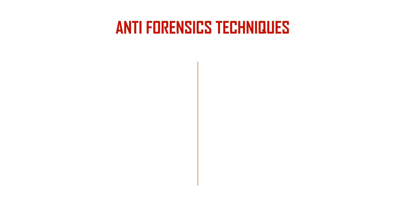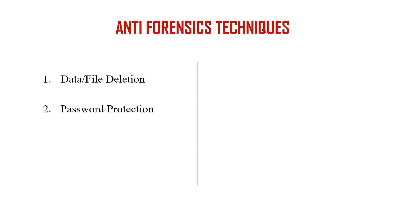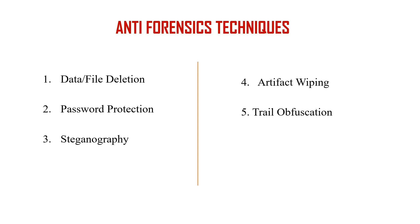Next we will see different antiforensic techniques. These are the methods that make the investigation process harder in order to protect the attacker. These techniques act against the investigation process and also impact the quality of evidence being collected. The types of antiforensic techniques are: data or file deletion, password protection, steganography, artifact wiping, trail obfuscation, and encryption. We will see each of these techniques in detail one by one.